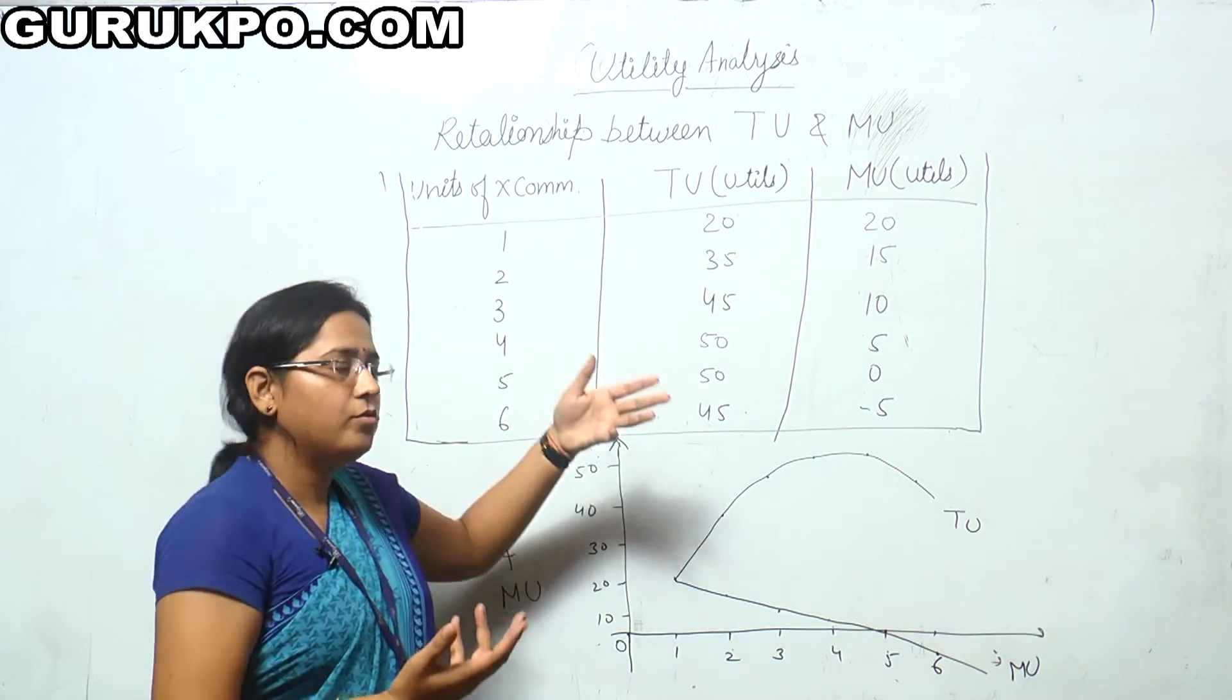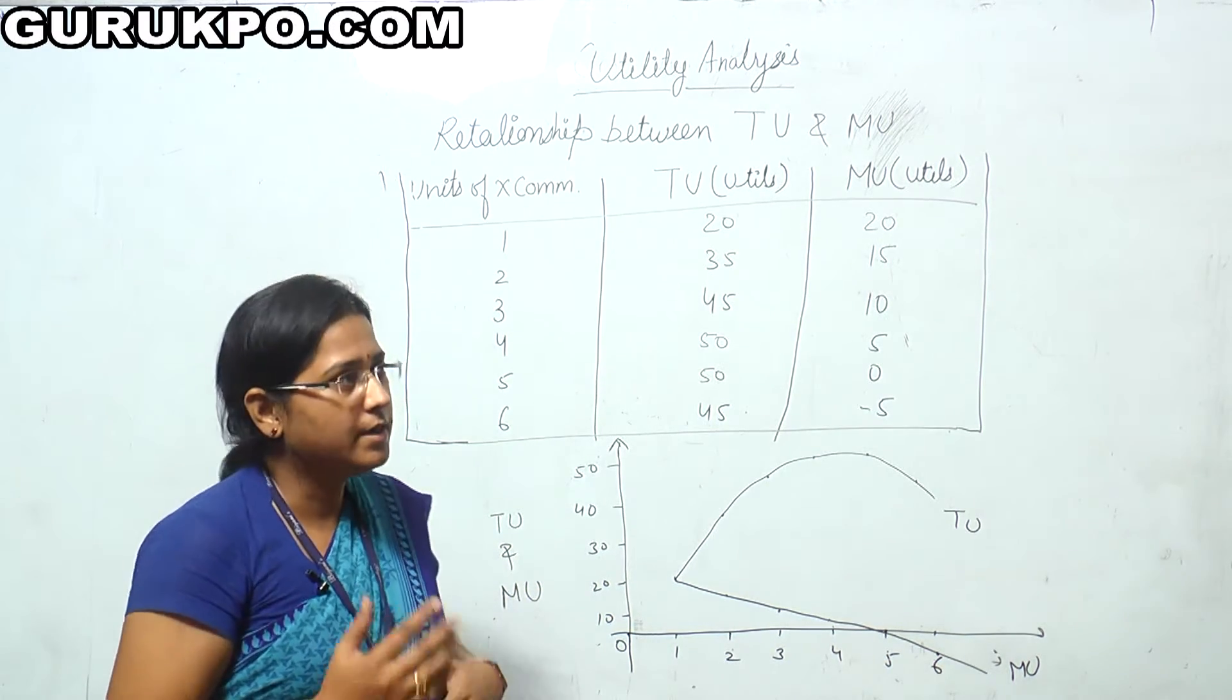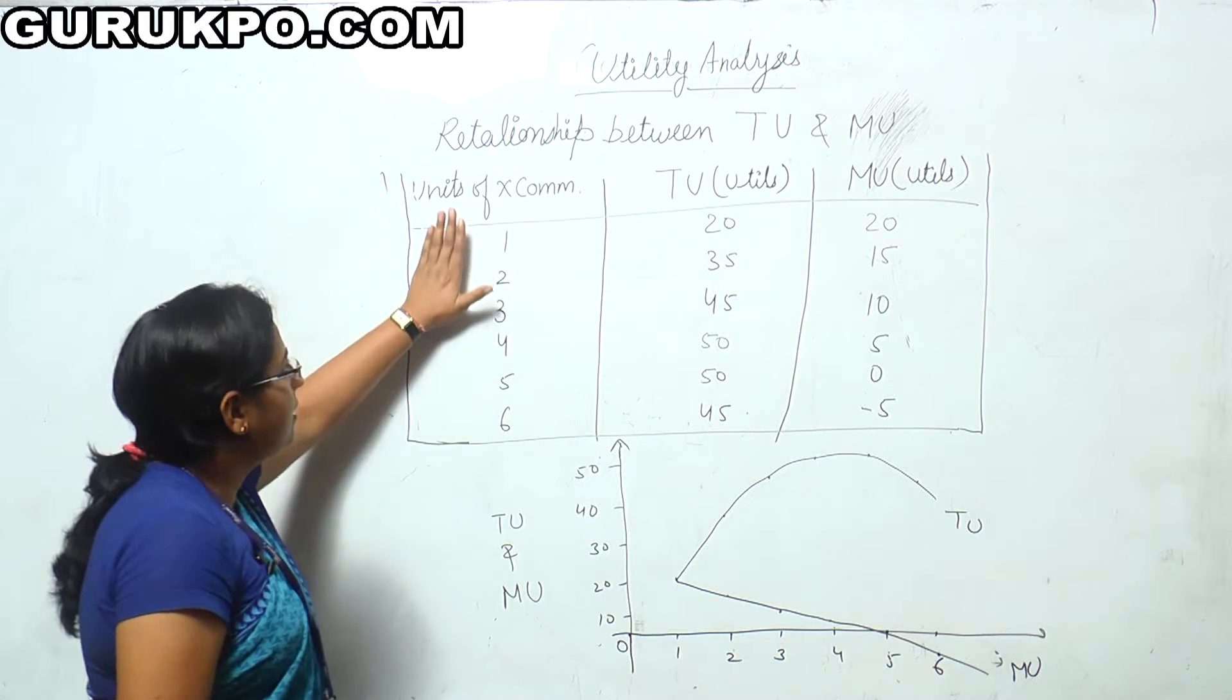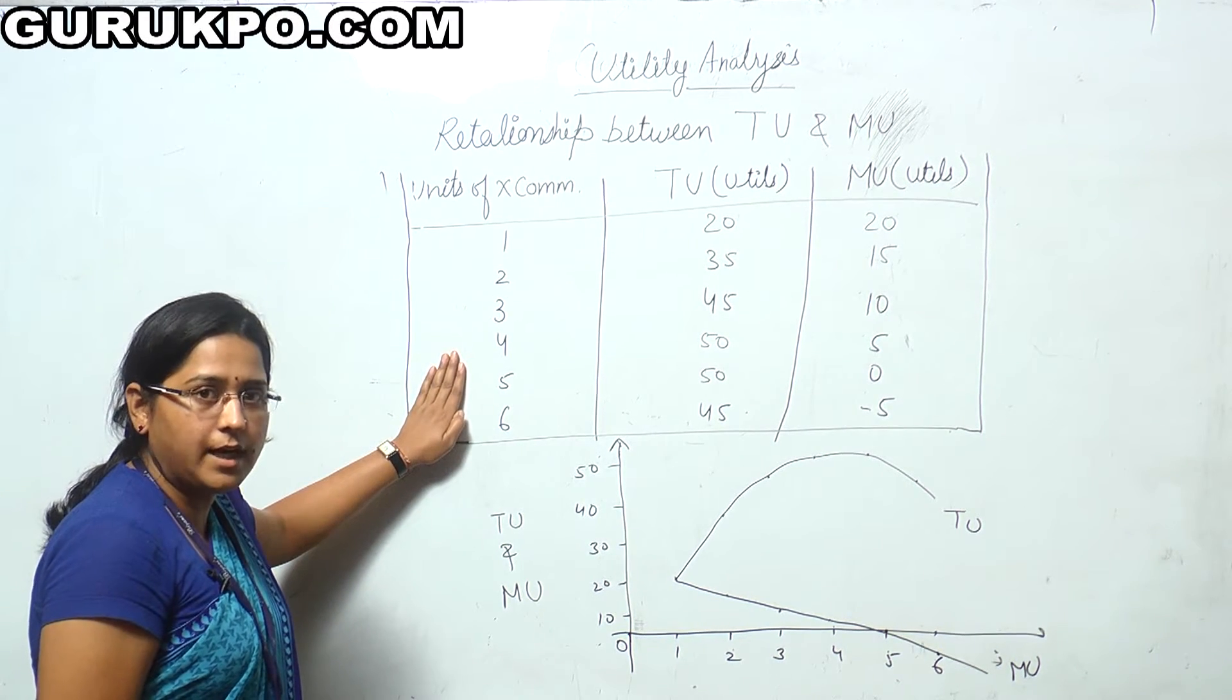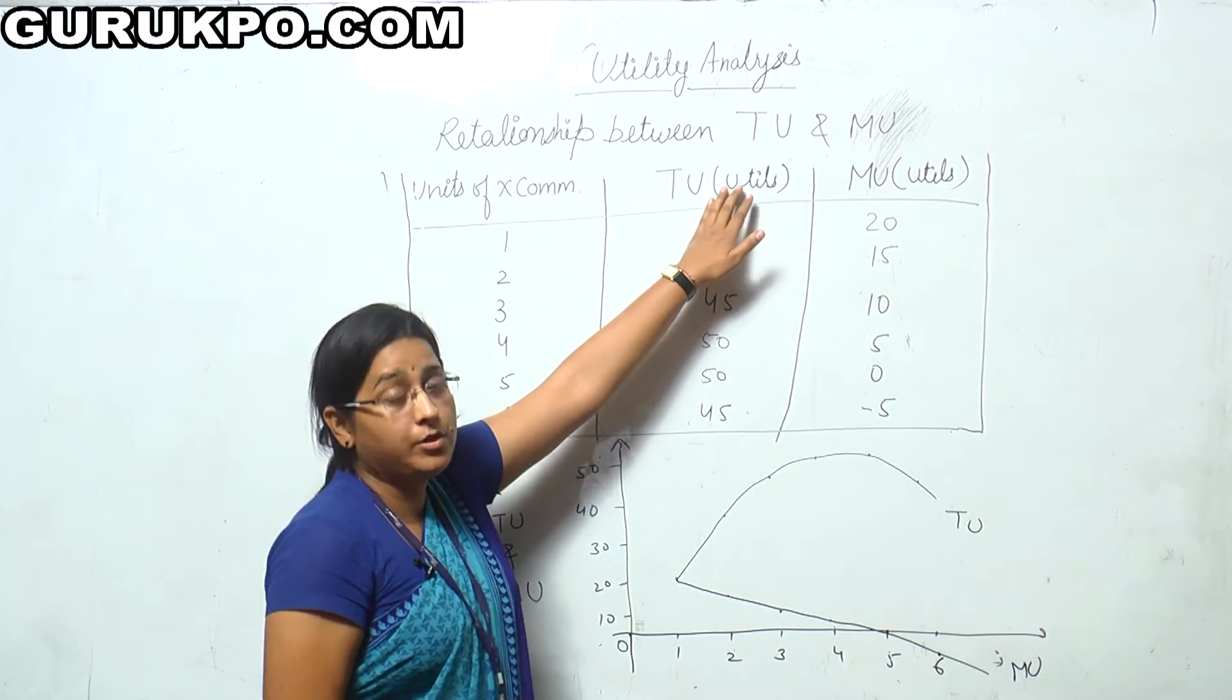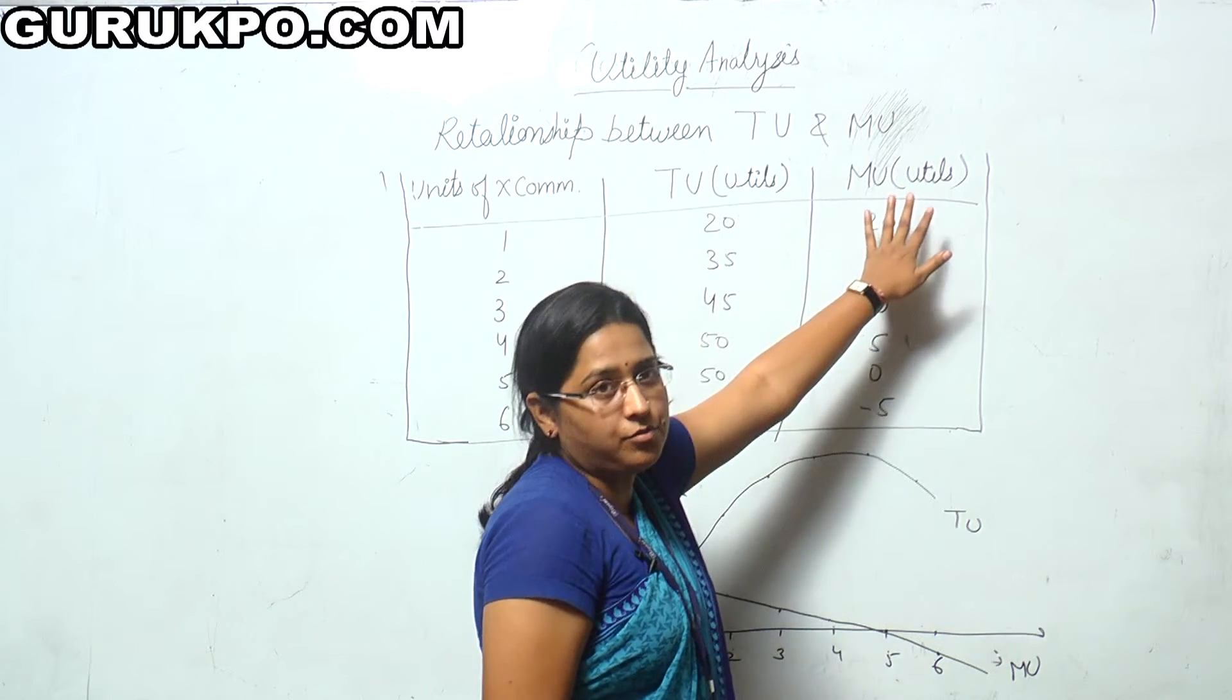But we want to know what is the relationship between total utility and marginal utility. We can see with this table here, this is the units of x commodity that we consume. This is the total utility that we measure in utils, and this is marginal utility that again we measure in utils.